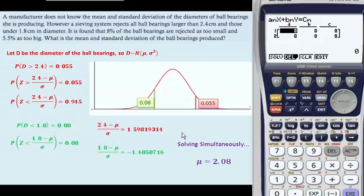A little bit of rearranging and solving that equation simultaneously using your calculator or algebraically, and you get to the answers of mu is 2.08 and sigma is 0.200.